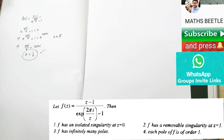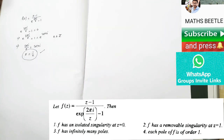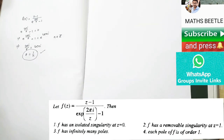Now the options: some options are claiming isolated singularity, some are claiming about removable singularity, and the fourth option says each pole of f is of a certain order.